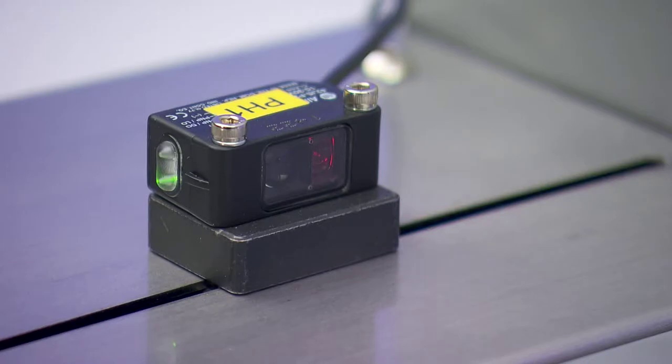An adjustable photo sensor detects when the leading edge of the carton reaches a given position and actuates the strapping cycle.